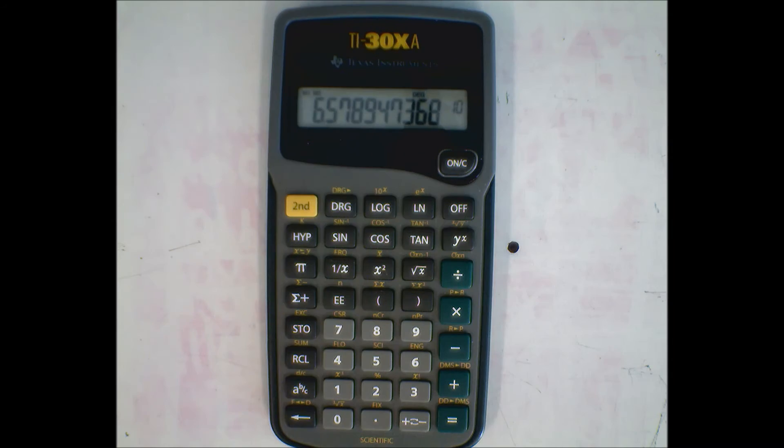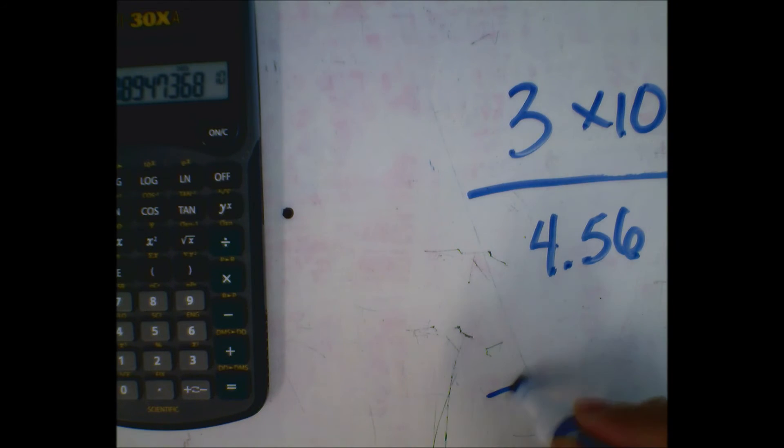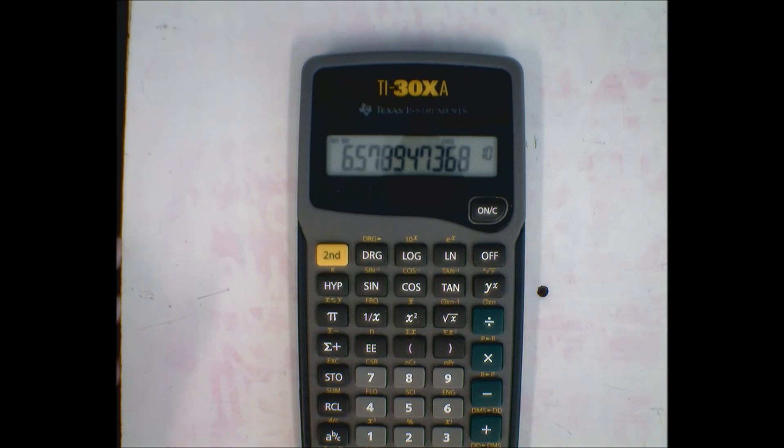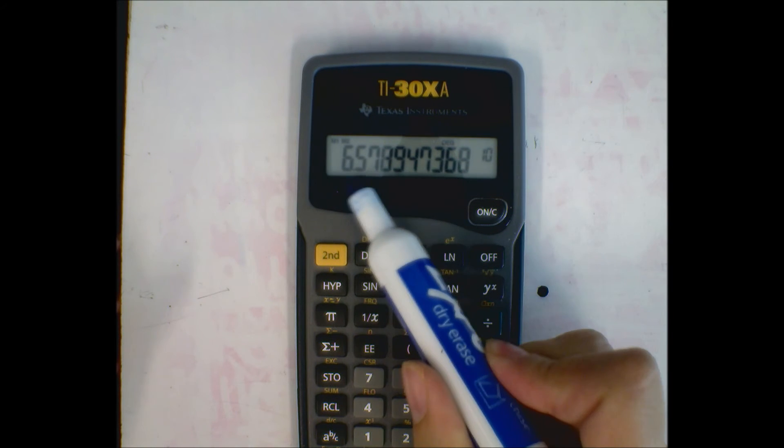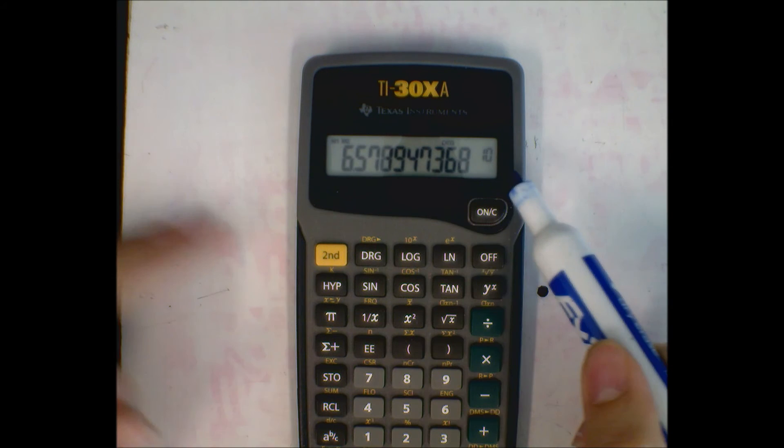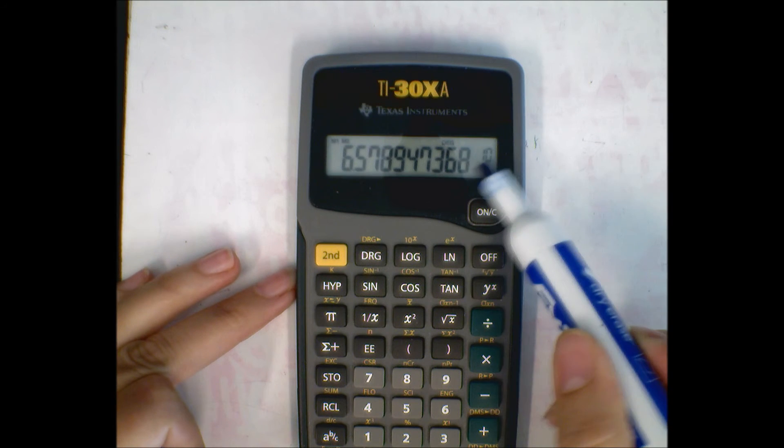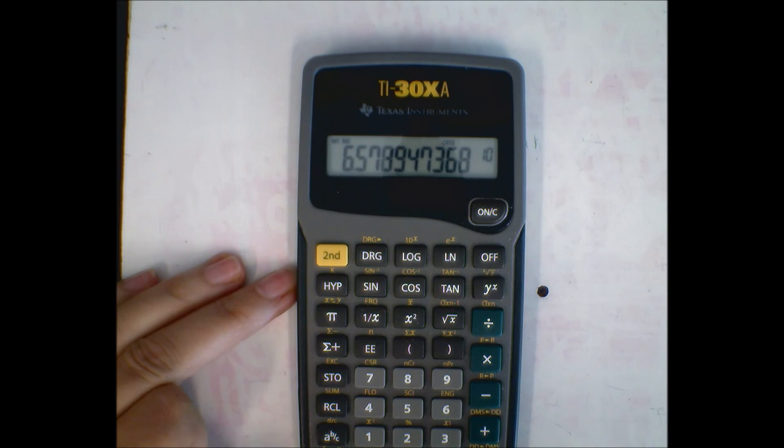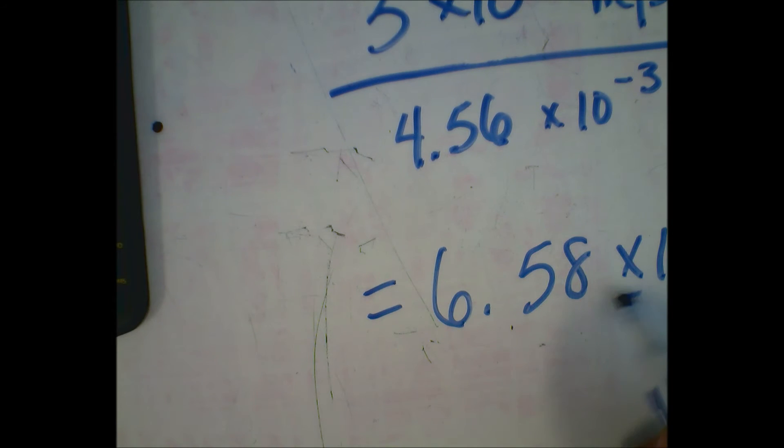It gives me this: 6.58 times 10 to the tenth, and that would be Hertz because it'd be one over second. You have all these numbers here, and if you notice they're a little larger than that one there, and there's a slight gap. That tells you that is the exponent. You have to remember to write the times and the 10 in your answer.